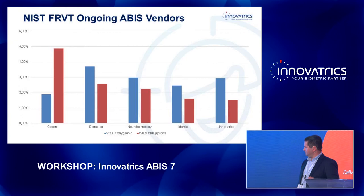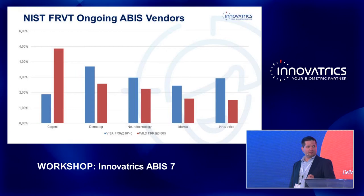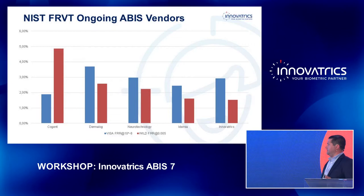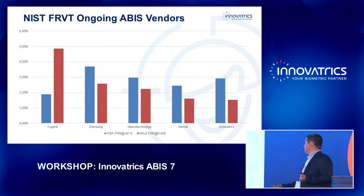We would like to be very open, and we are comparing the results of Innovatrix and other ABIS competitors here. There are multiple categories on FRVT. When you are considering a system, you can compare the results of different vendors. Right now, we are number one in the wild category among all vendors.